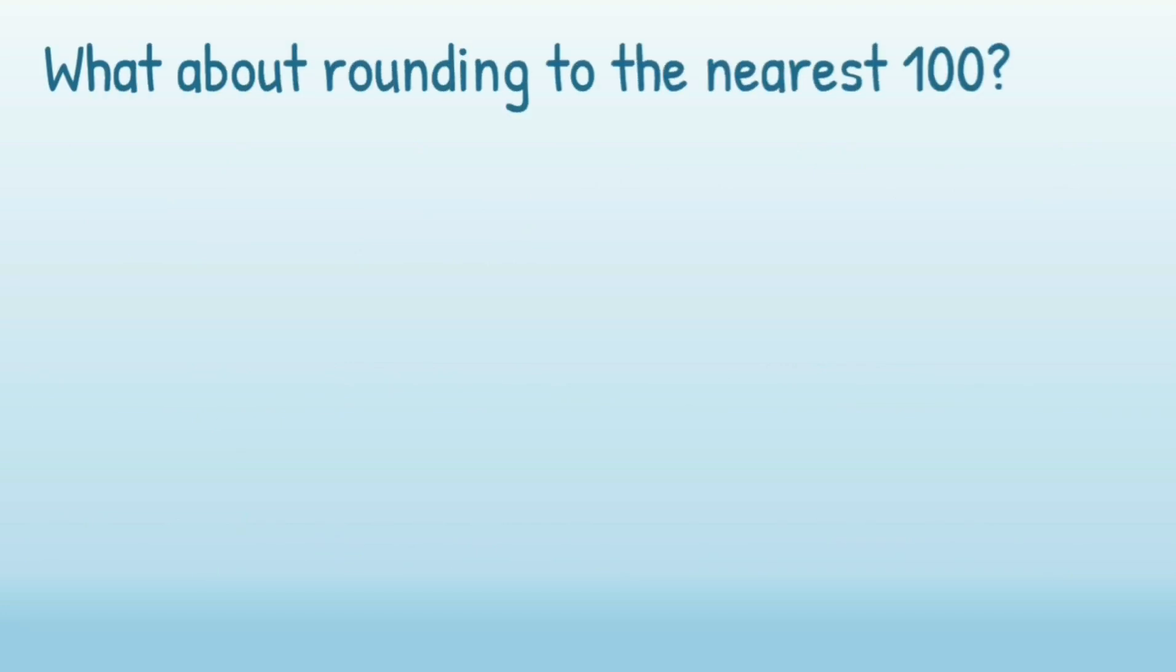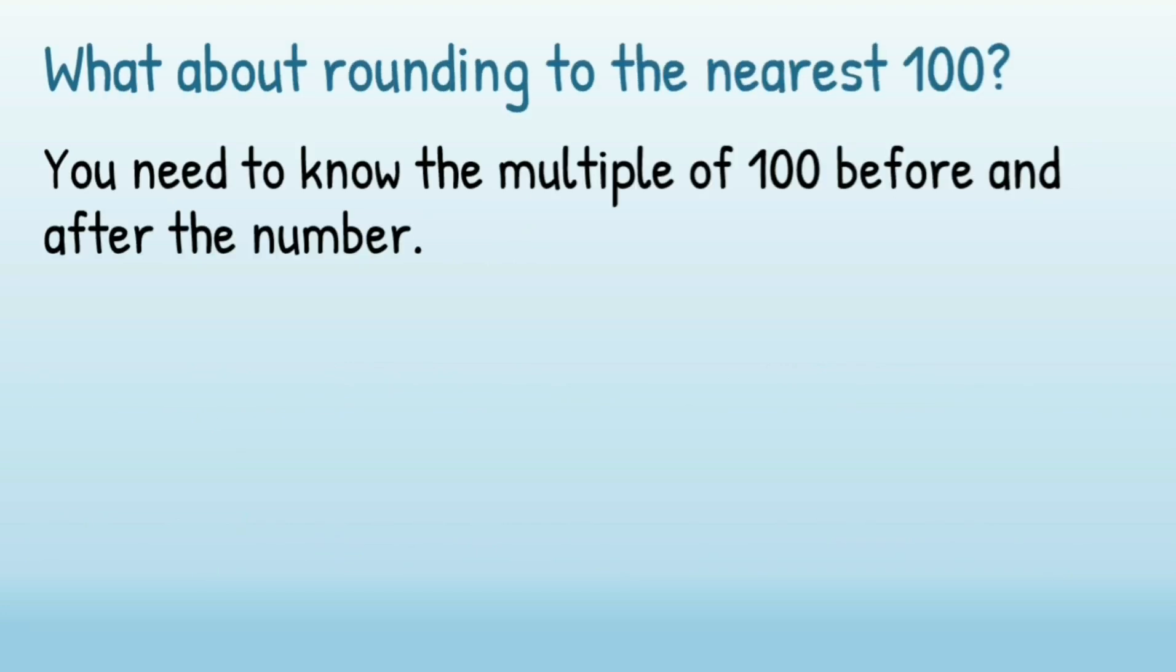If we're rounding to the nearest 100, you need to know the multiple of 100 that comes before your number and the multiple of 100 that comes after your number. Then you can decide which multiple of 100 is closer to your number.